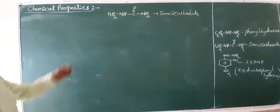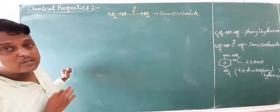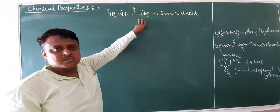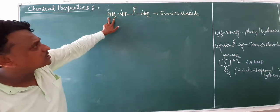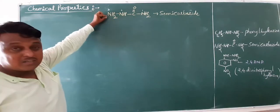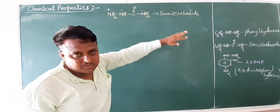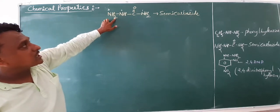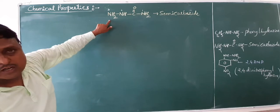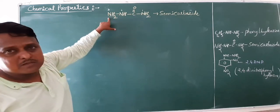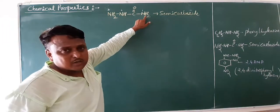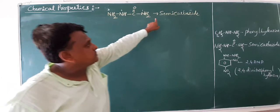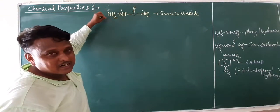The important question in a competitive exam: in semi-carbazine there are three nitrogen atoms — which nitrogen undergoes condensation? The answer is the third nitrogen. The third nitrogen is far away from the carbonyl carbon, so there is no steric hindrance. The first nitrogen is near to the carbonyl carbon, so the molecule undergoes steric hindrance. Therefore, semi-carbazine's third nitrogen only undergoes condensation.